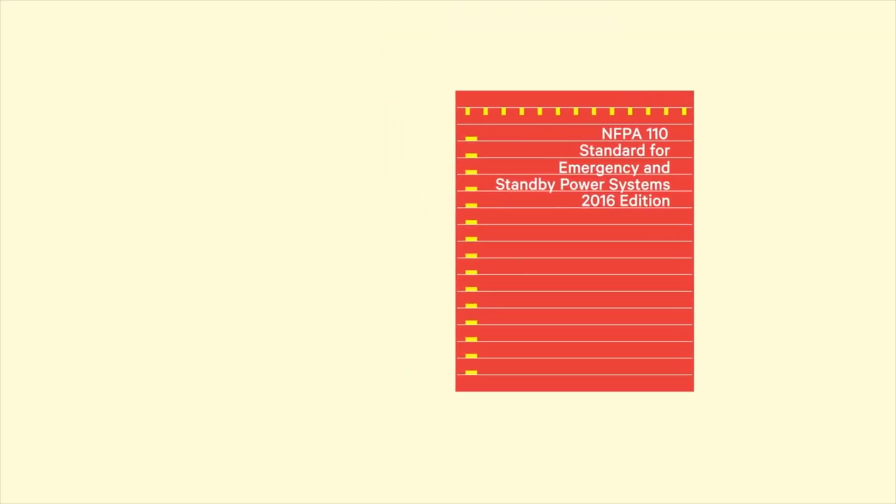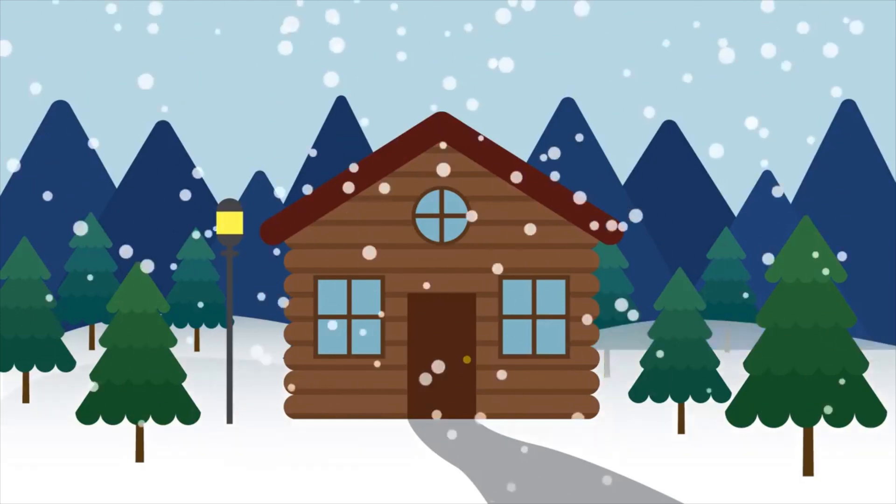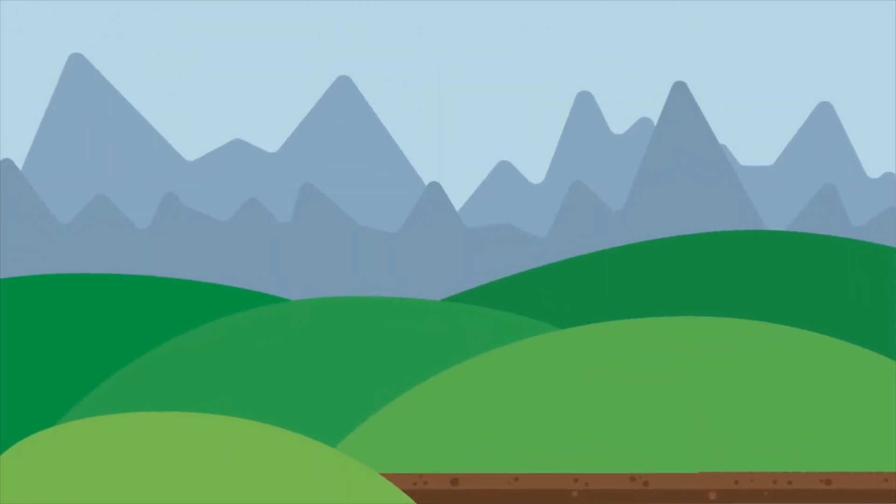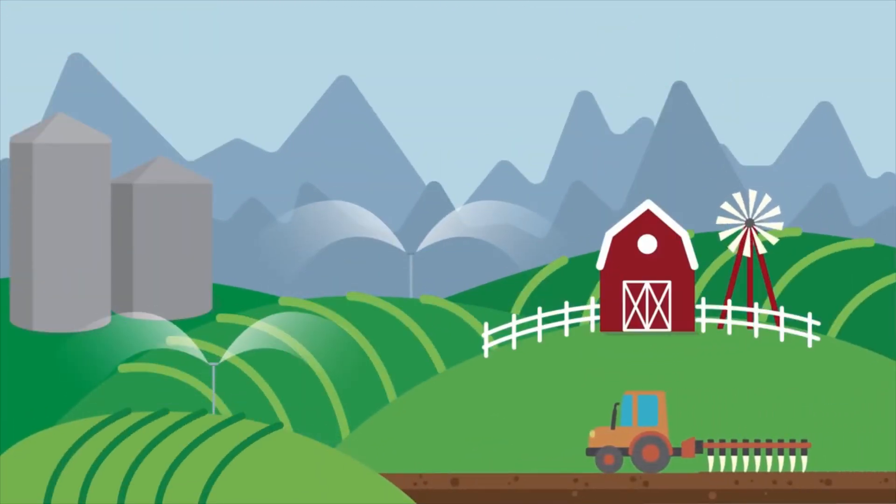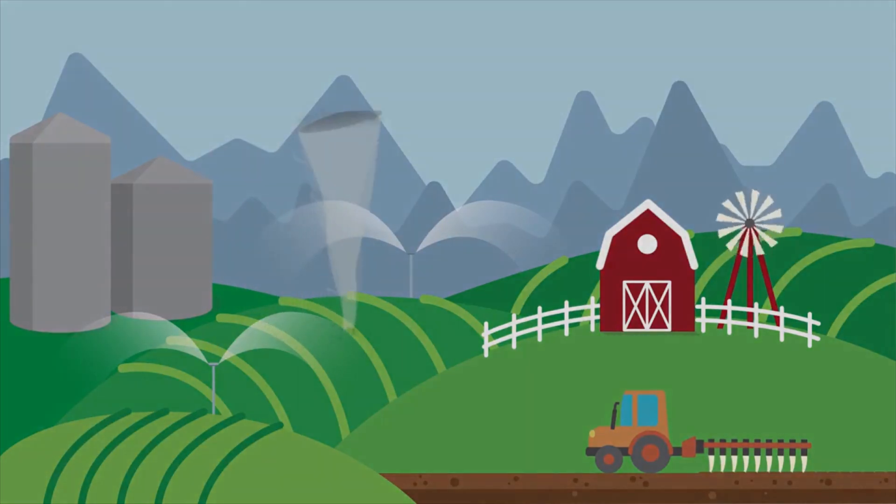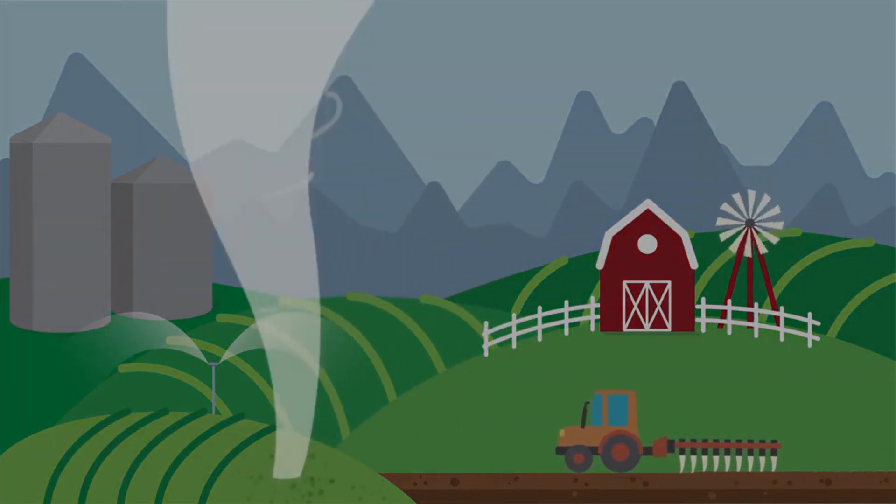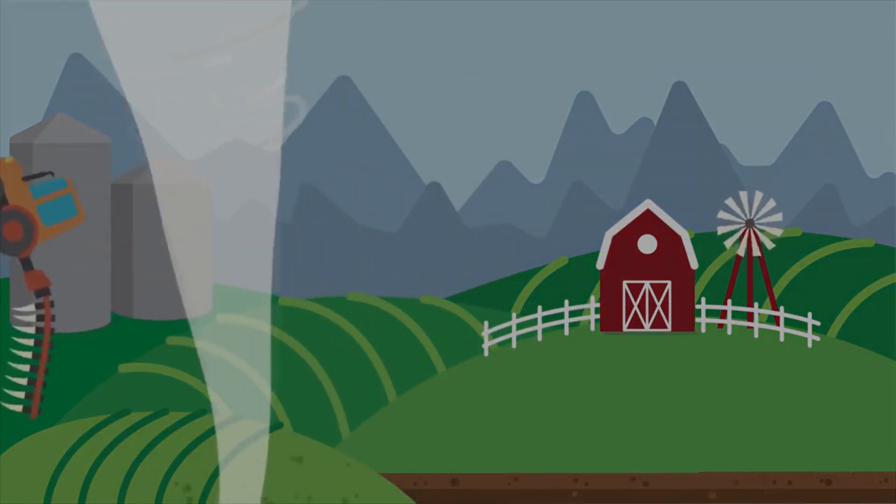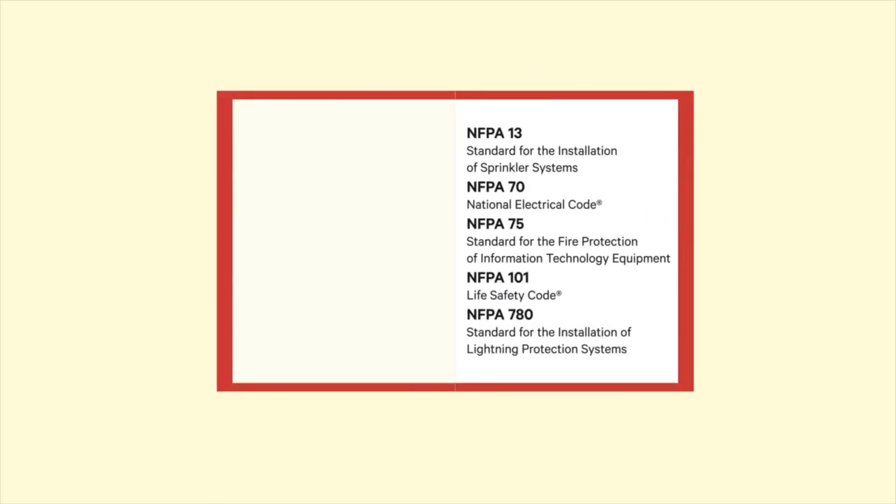National building codes do not take into consideration every local risk to critical electrical system components in areas vulnerable to extreme weather events. Systems designed to enable electrical components to continue to provide services during disasters takes a great deal of thought and planning, and it is difficult to include every possible scenario. Even codes and standards as extensive as they are can't cover everything.